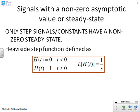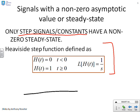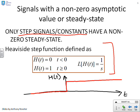This slide is just for completeness. Step signals or constants are the only signals with a non-zero steady state. If you look in the books, especially chemical engineering, you'll find they're often defined as the Heaviside step function. This function is defined as having a zero value in negative time, then going to one at time zero and staying at one thereafter — which is why it's called a step function, because it looks like a step.